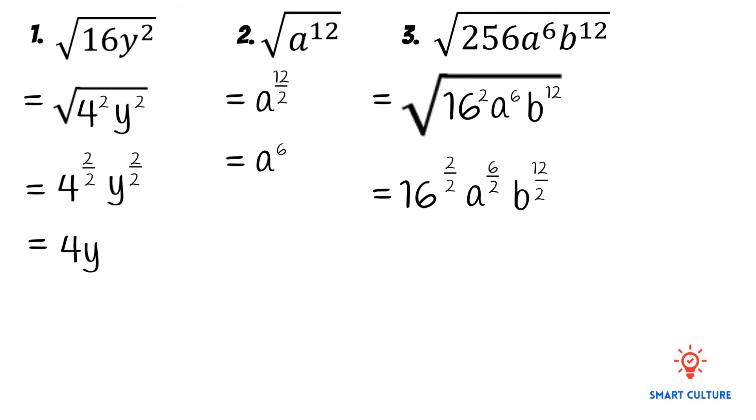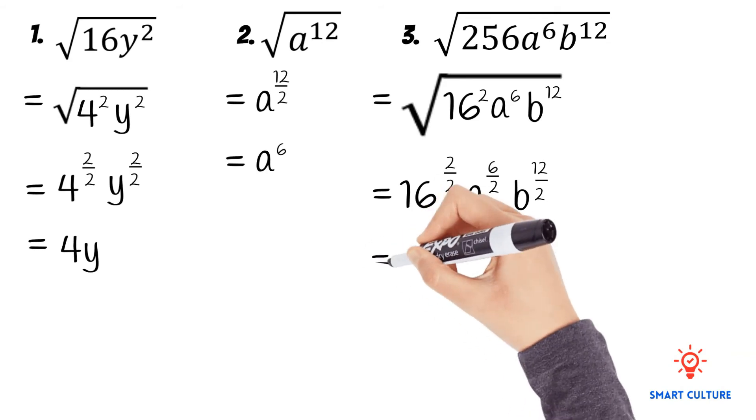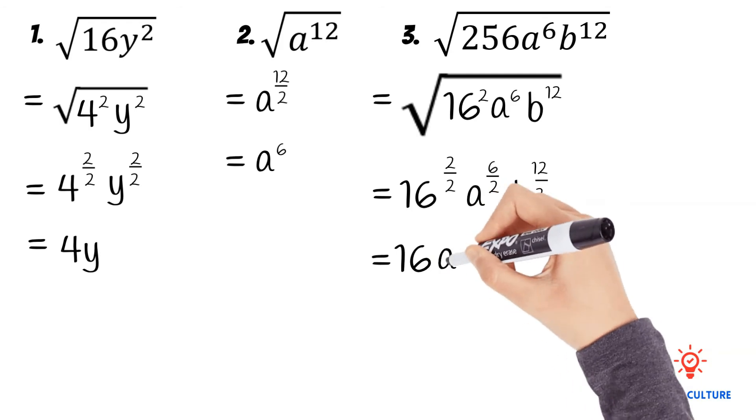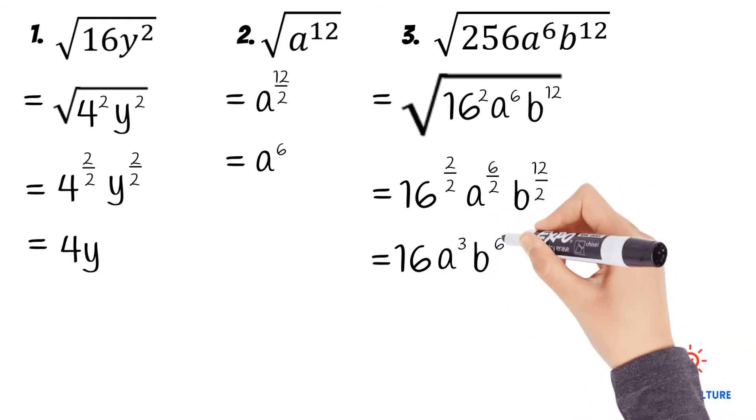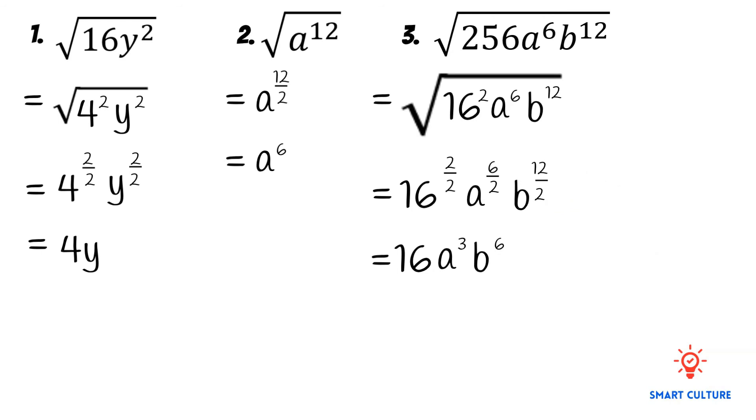The exponent of 16 will be 1. The exponent of a will be 3 since 6 divided by 2 is equal to 3. And the exponent of b will be equal to 6 since 12 divided by 2 is equal to 6. So the final answer will be equal to 16a cubed b to the power of 6.